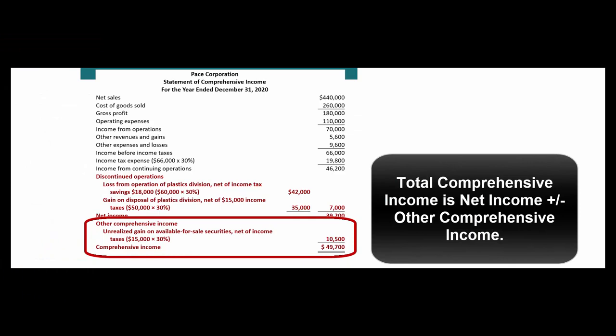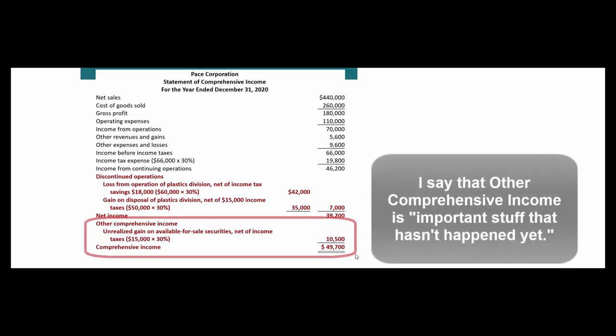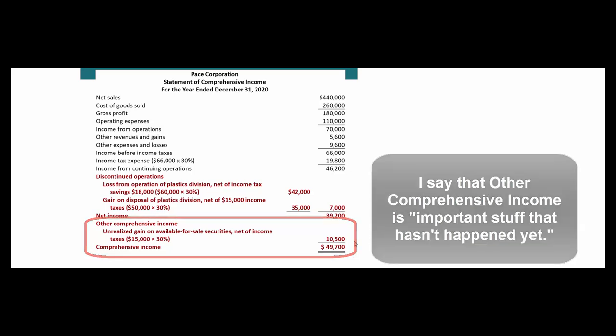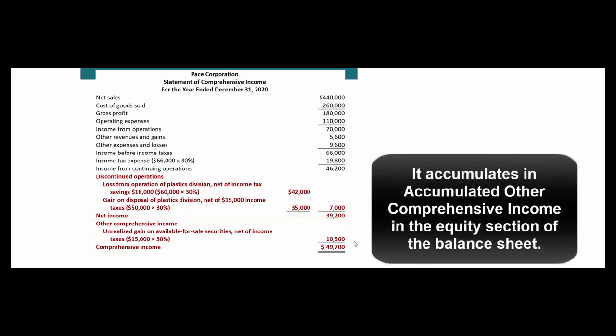So we've talked about net income; now we're going to talk about comprehensive income. We can present this in a separate schedule or tack it onto the bottom. Other comprehensive income is stuff besides net income that's important enough to talk about even though it hasn't happened yet. It moves our shareholders' equity up and down but doesn't show up in retained earnings because it hasn't happened yet.